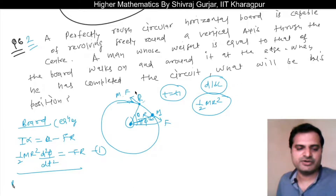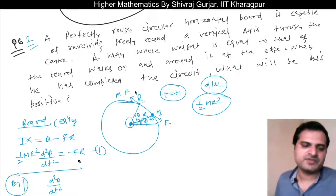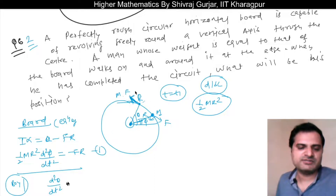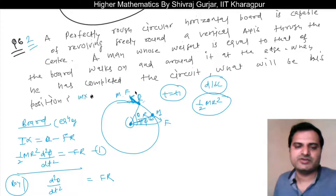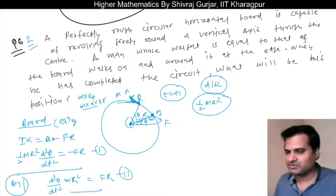Now let us see the boy. The angular acceleration of the boy is d²θ/dt². The friction on the boy is in the anti-clockwise sense, so it will be positive. The moment is +FR, and the effective force gives mass into tangential acceleration, which is M × (d²θ/dt²) × R, into R. So MR² × d²θ/dt² = +FR. This is the equation for the boy.